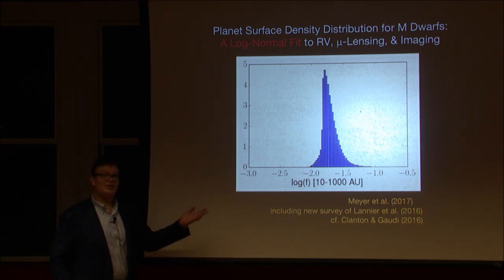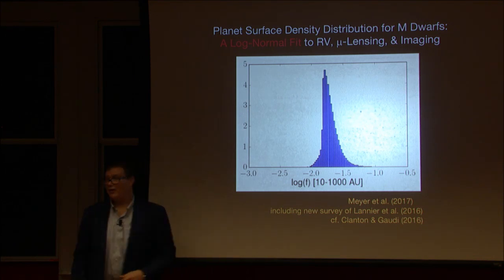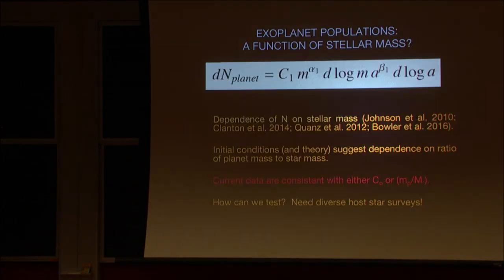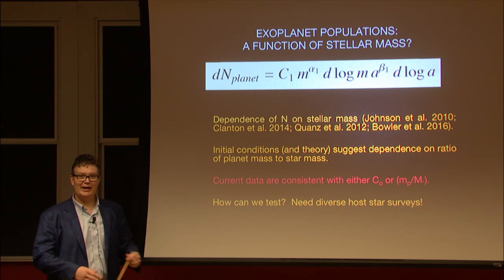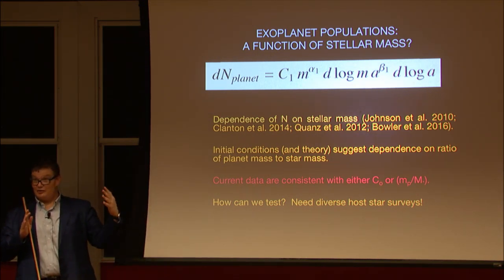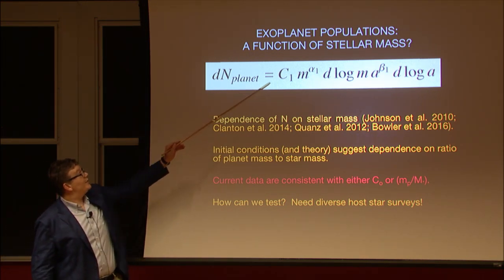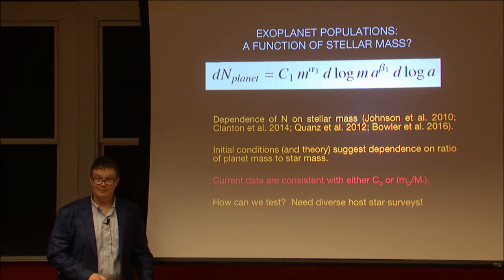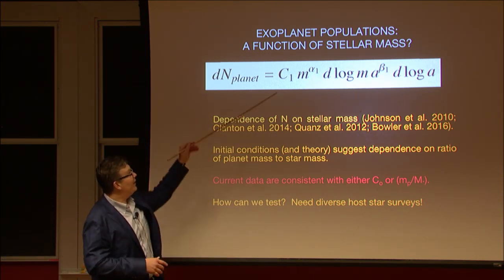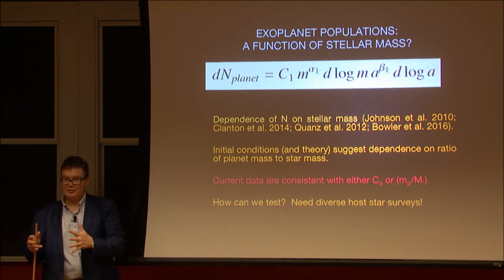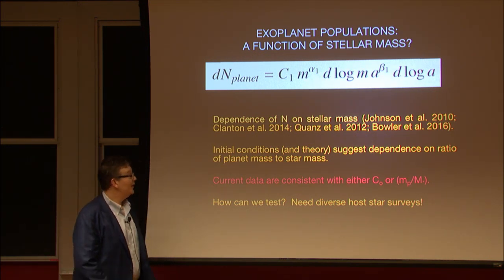We're getting an answer consistent with the idea that overall gas giant frequency depends on stellar mass — John Johnson pointed that out, and Brendan Bowler did further work. Several people have noted you can't square everything we've seen as a function of stellar mass with a single exoplanet population. Whether this dependence is on the normalization factor or the planet mass function is unclear: if gas giants formed more efficiently around higher mass stars, the data are consistent with that; if the efficiency is the same but the planet mass function is tilted relative to stellar mass, the data are consistent with that too.